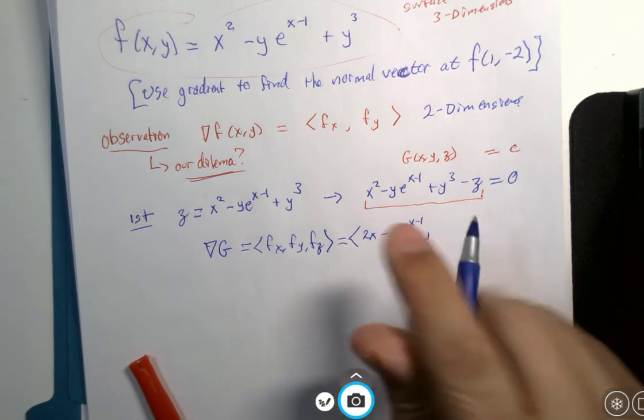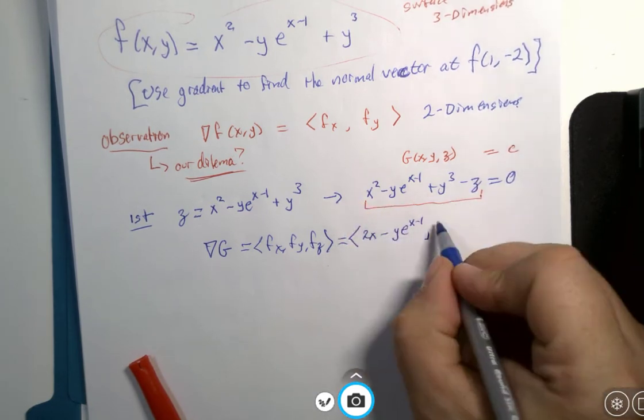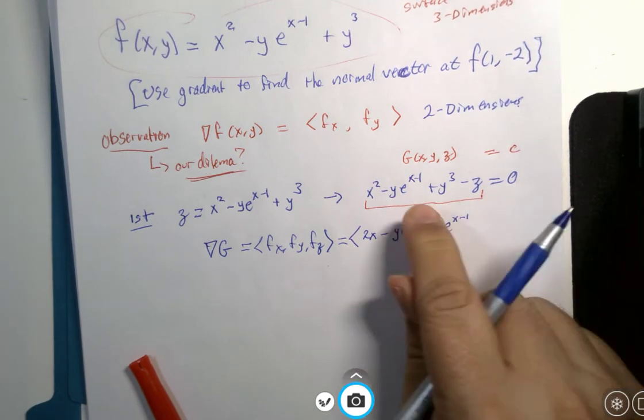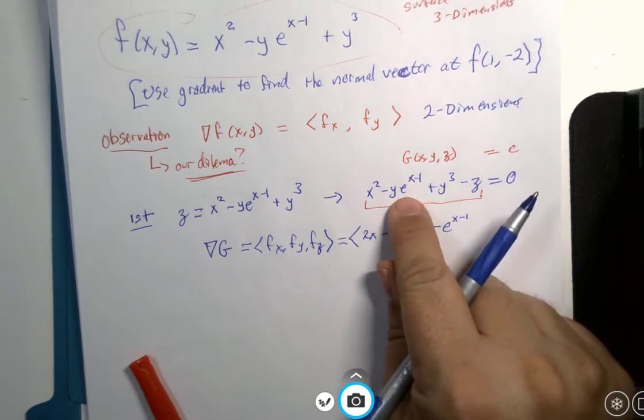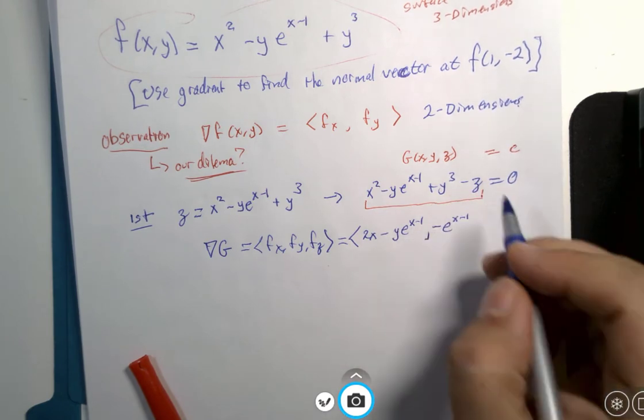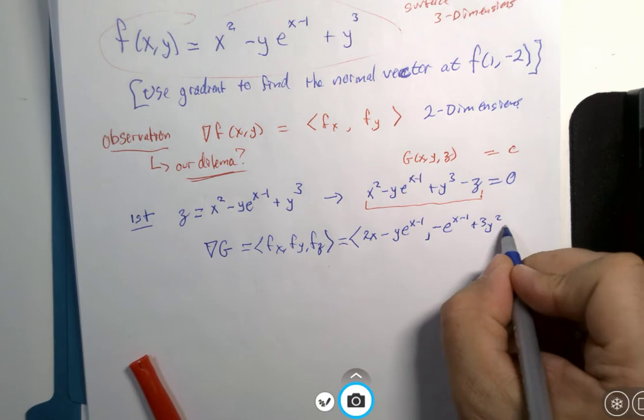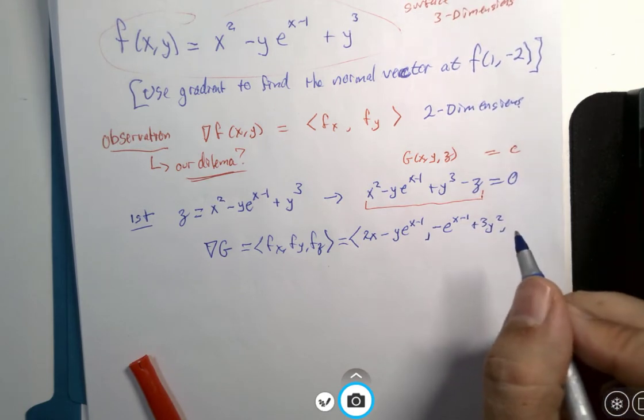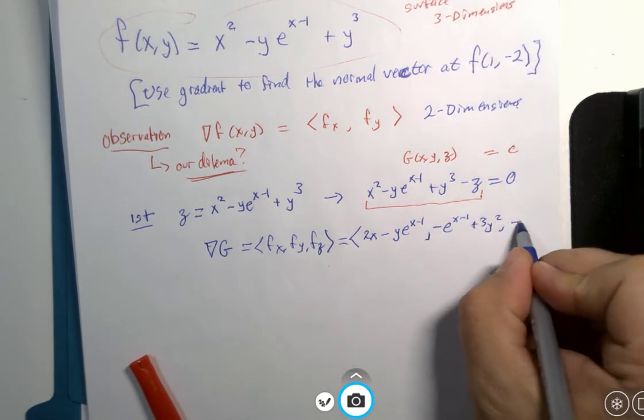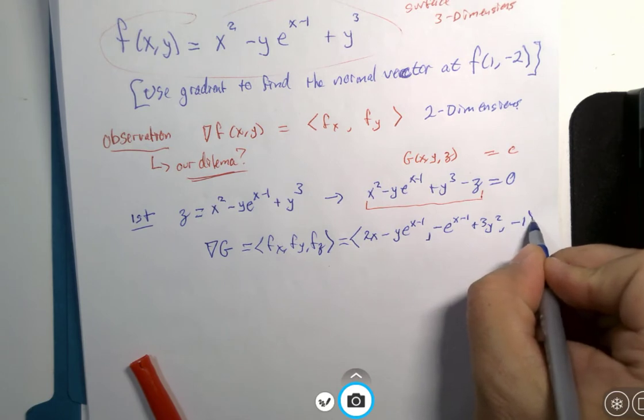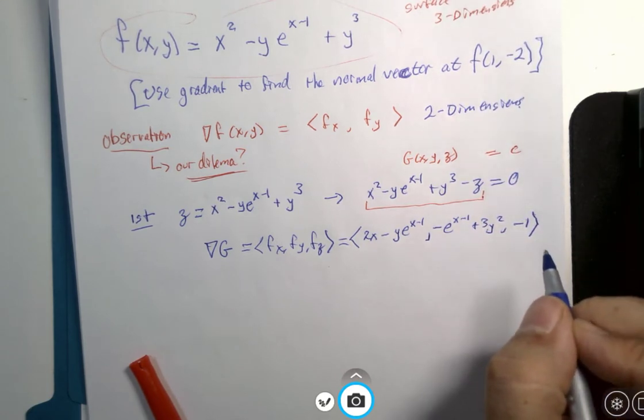Y is the variable. That's 0. Minus e to the x minus 1 because the derivative of y is 1 and this is a constant. Derivative of that is 3y squared. That's 0. And then if z is the variable, I get a modest little negative 1. It's a constant, but it is the derivative.